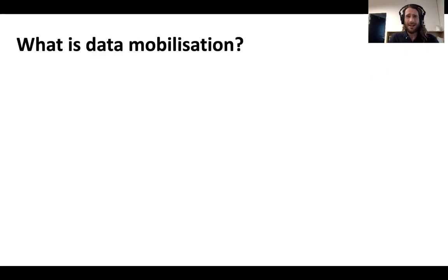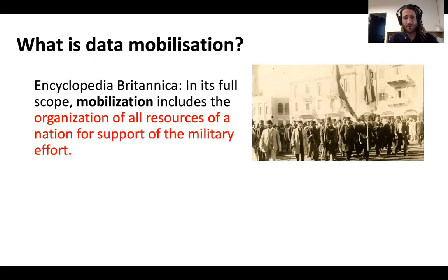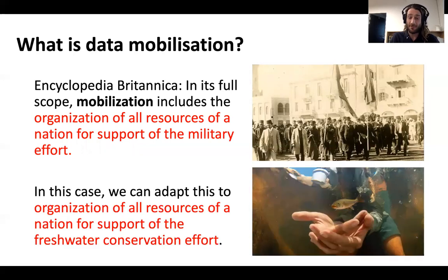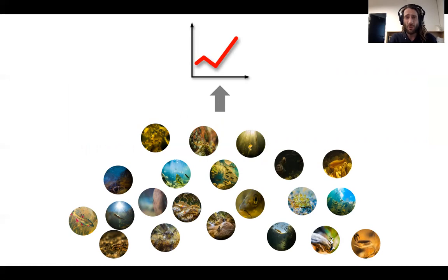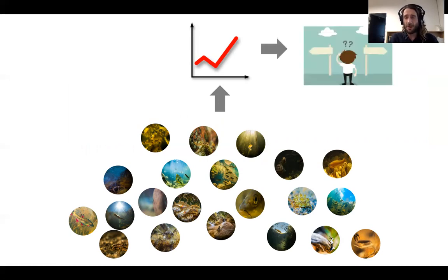But to start off with, what exactly is data mobilization? Mobilization is a word often used in military and war — the organization of all resources of a nation for the support of the military efforts, according to Encyclopedia Britannica. But in our case, this definition could be adapted to the organization of all resources of a nation for support of a freshwater conservation effort. Mobilization in the freshwater data context is really this idea of bringing together data from a wide range of sources into the same place and format, thereby allowing us to tap into the patterns and stories held deeper within those data, which should support smarter management and decision making. And that's really what the freshwater biodiversity information system is all about.